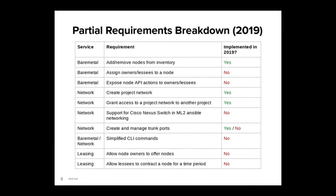Next are the network requirements. We wanted users to be able to create their own networks and to potentially share those networks with another project — things that Neutron already supported very well. The MOC also needed ML2 Ansible Networking to support the Cisco Nexus switch, and we discovered that was something we needed to code ourselves. We also needed the ability to create and manage trunk ports. After some investigation, we learned that Neutron did most of what we needed, but there were some pieces that were missing.